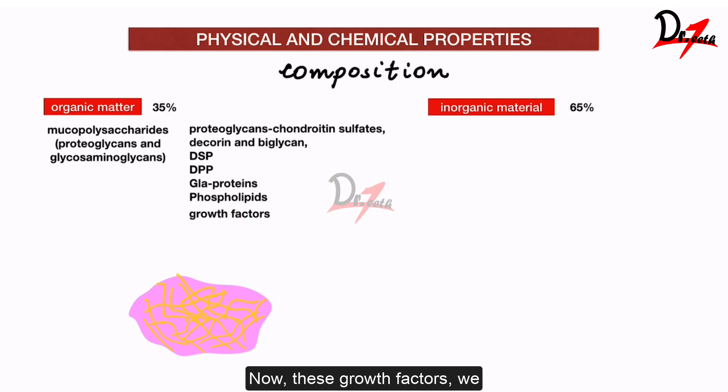These growth factors, we have the transforming growth factor which is the TGF. We have the fibroblast growth factor which is the FGF. We have the insulin-like growth factor which is the IGF. We have the platelet-derived growth factor which is PDGF. Placenta growth factor which is PGF. Vascular endothelial growth factor which is VEGF and angiogenic growth factor which is AGF. So many growth factors are there and as already told, we have the type 1 collagen as the principal type of collagen.